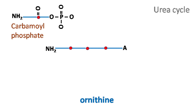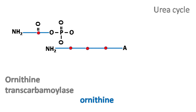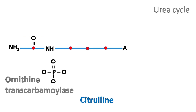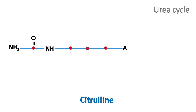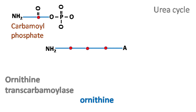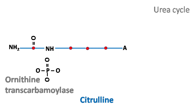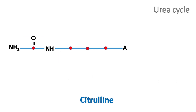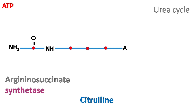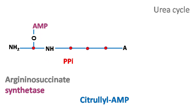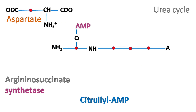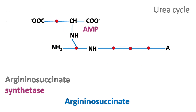Carbamoyl phosphate then reacts with ornithine to form citrulline. Carbamoyl phosphate then reacts with citrulline to form a citrullinyl-AMP intermediate. Aspartate then reacts with the citrullinyl-AMP to form argininosuccinate.